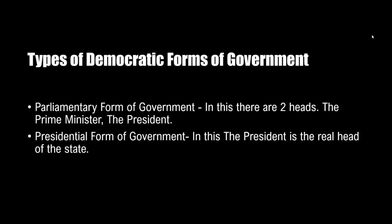In the parliamentary form of government, the executive is a part of the legislative branch. The head of the state is the president, who is not the head of the government. The president becomes the head of the country, but the head of the government is the prime minister, who is the leader of the majority party, and it is he who controls the executive. India follows this form of government.